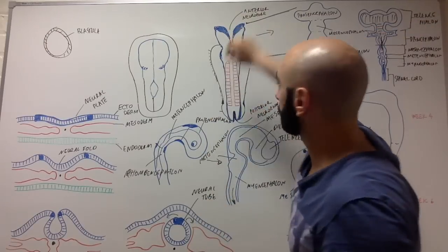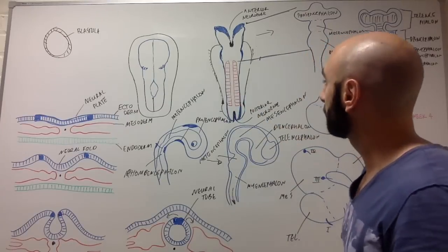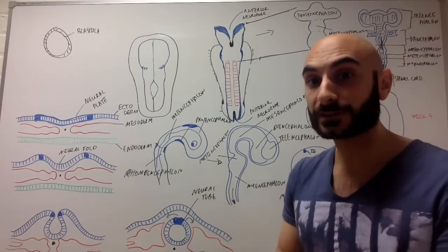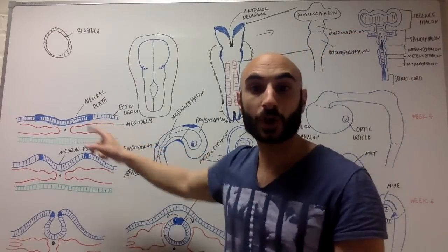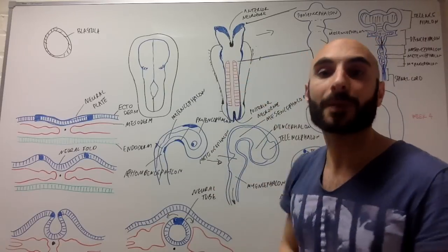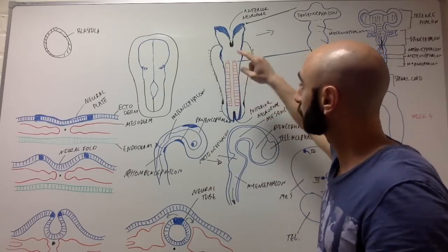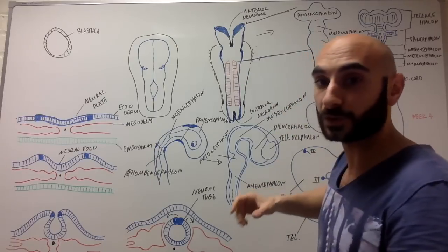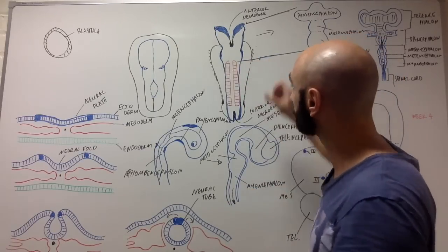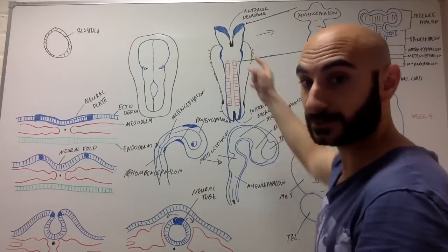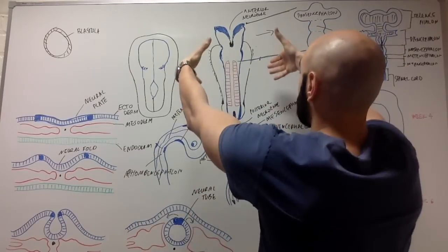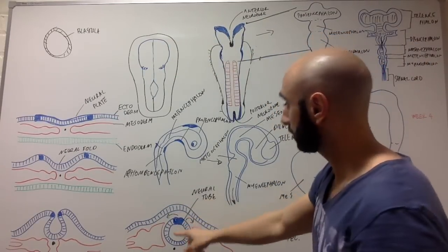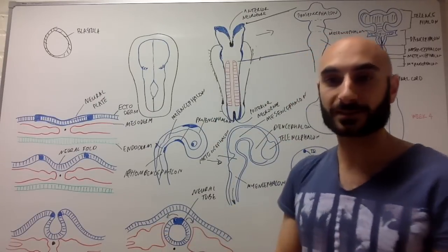To better understand what you're looking at: in blue we have the neural tube — your central nervous system. In red we have the mesoderm, the somites, which will become your muscles. Although shown in red, it's not on top; it's still underneath the ectoderm and alongside the neural plate. So picture this cross-section coming up like this.